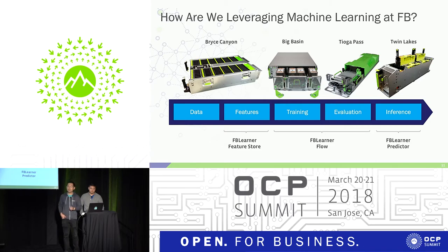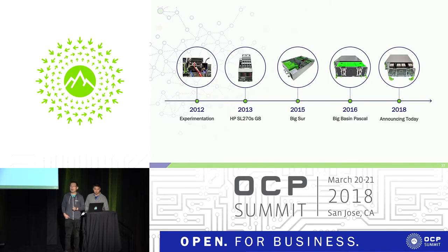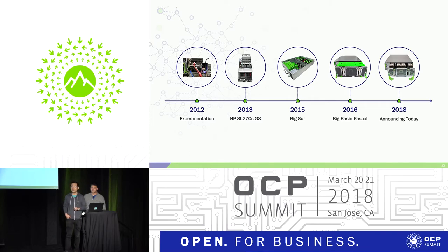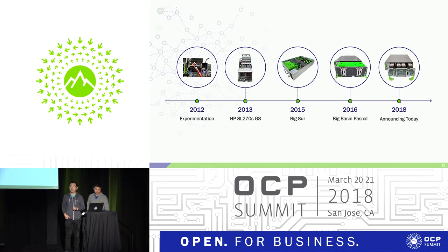FB Learner Predictor does inference on compute platforms Tioga Pass and Twin Lake. Among all those platforms, Big Basin is specifically developed for machine learning hardware, and we'd like to focus on it for the rest of this talk. In recent years, we've seen a significant increase in investment in our machine learning hardware at Facebook. In 2012, we started initial experimentation of GPU servers in our lab. In 2013, we began initial deployment of GPU servers with the HPSL270S platform with the Kepler GPUs.